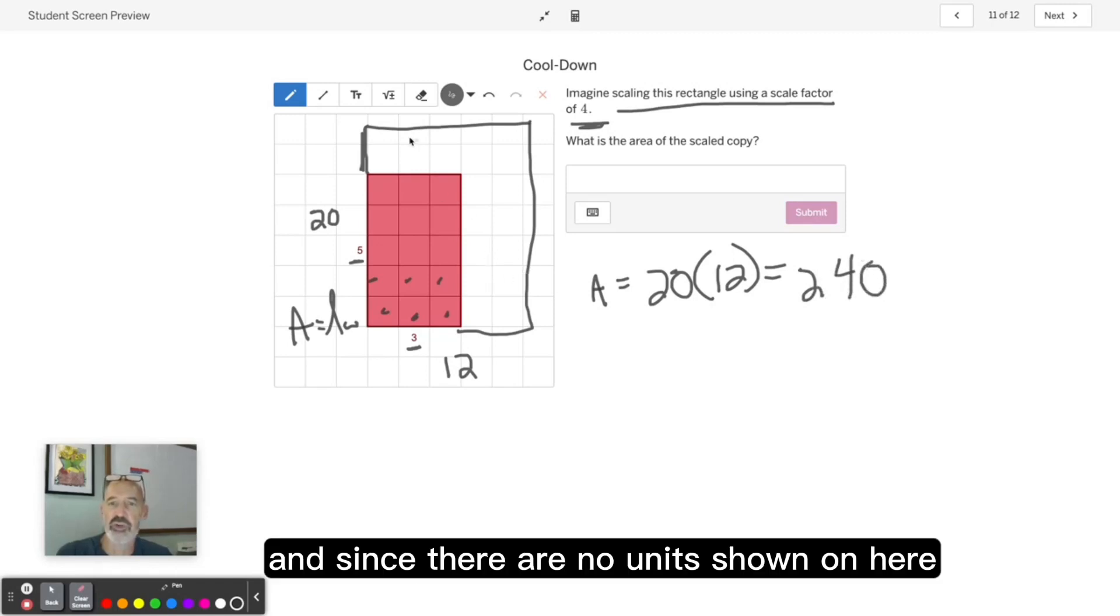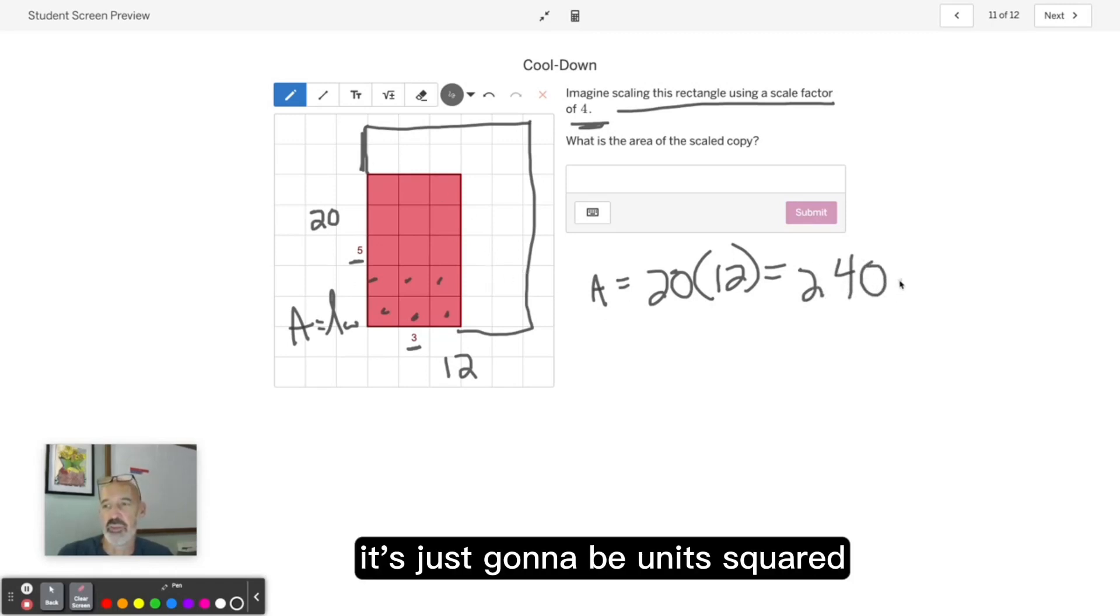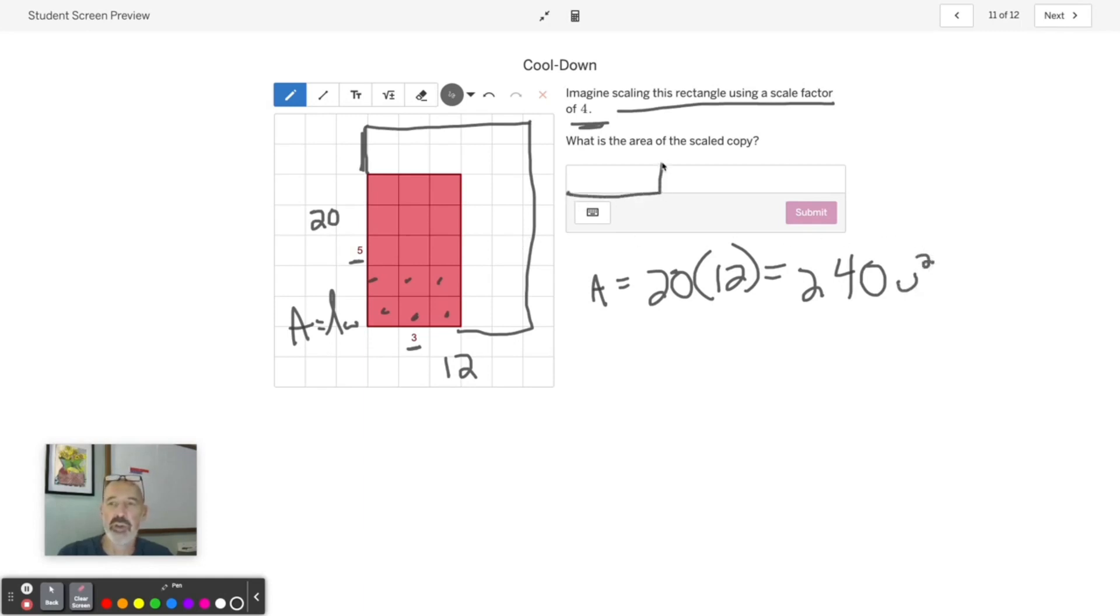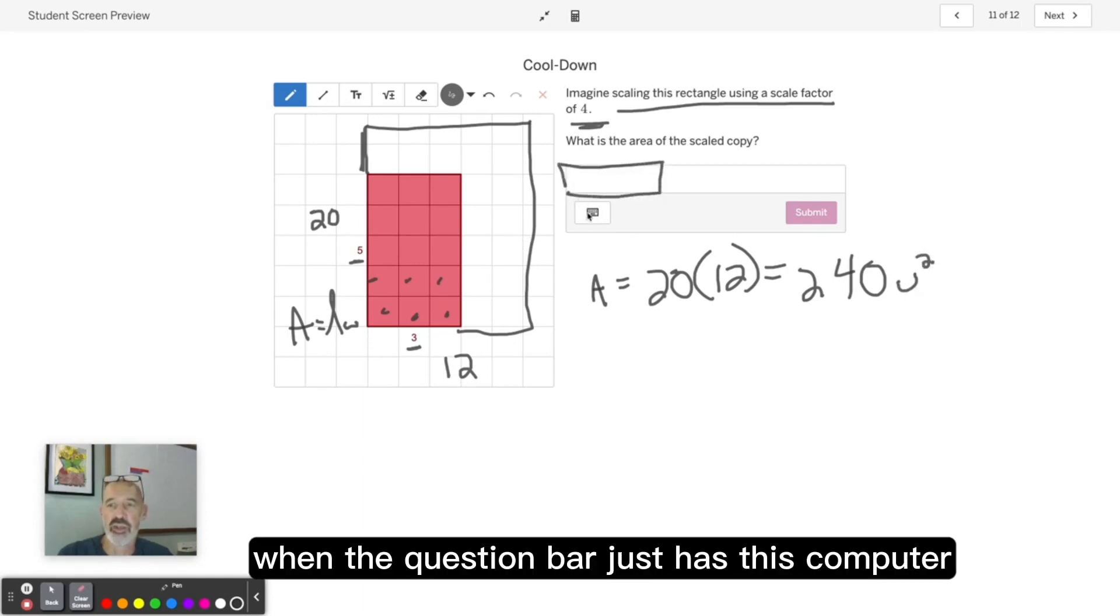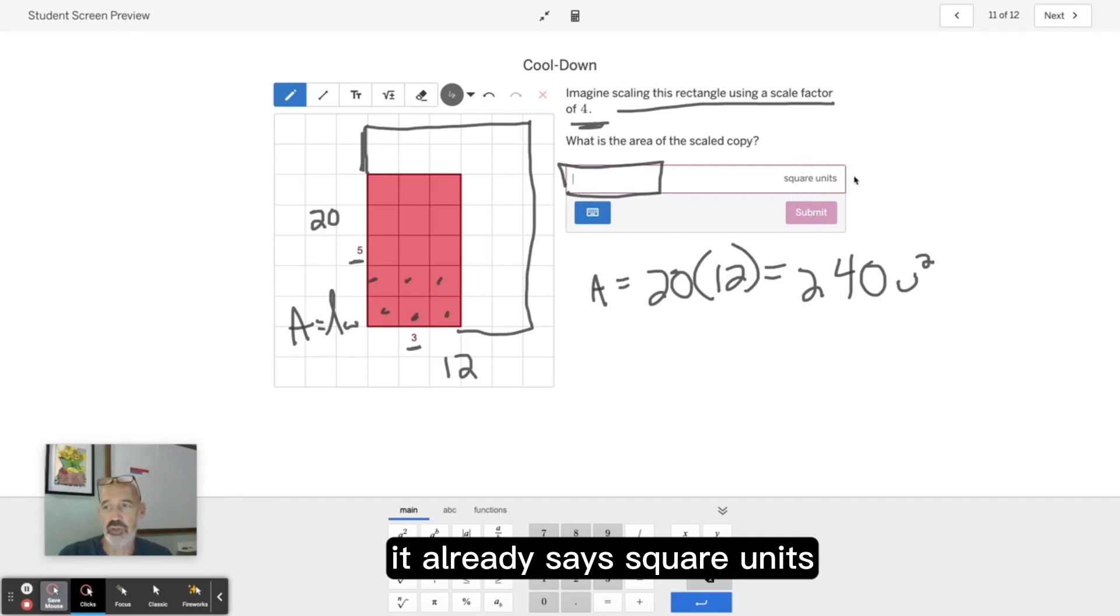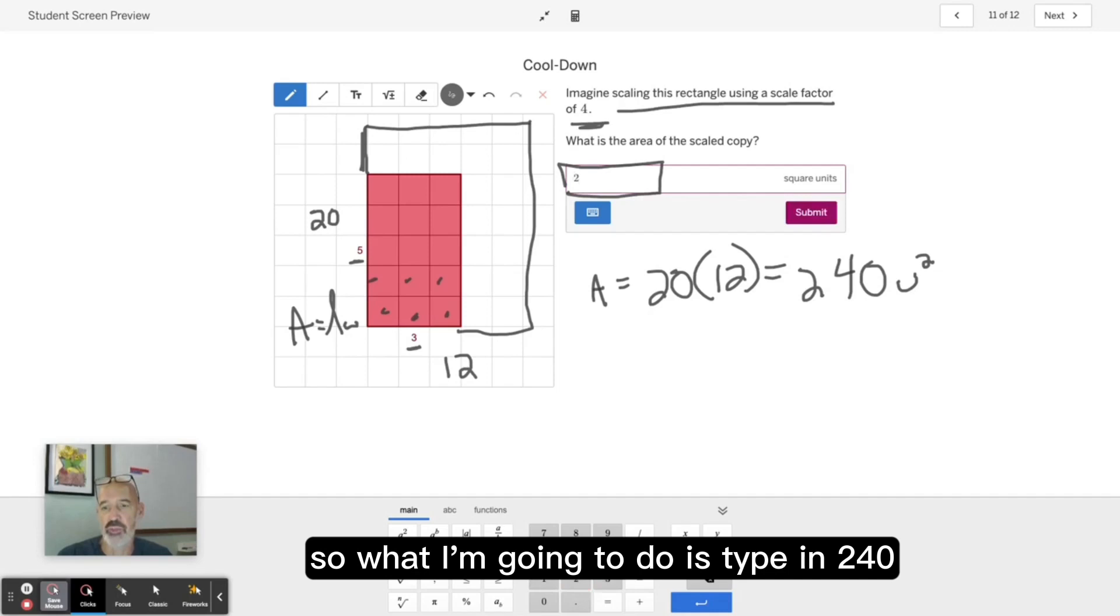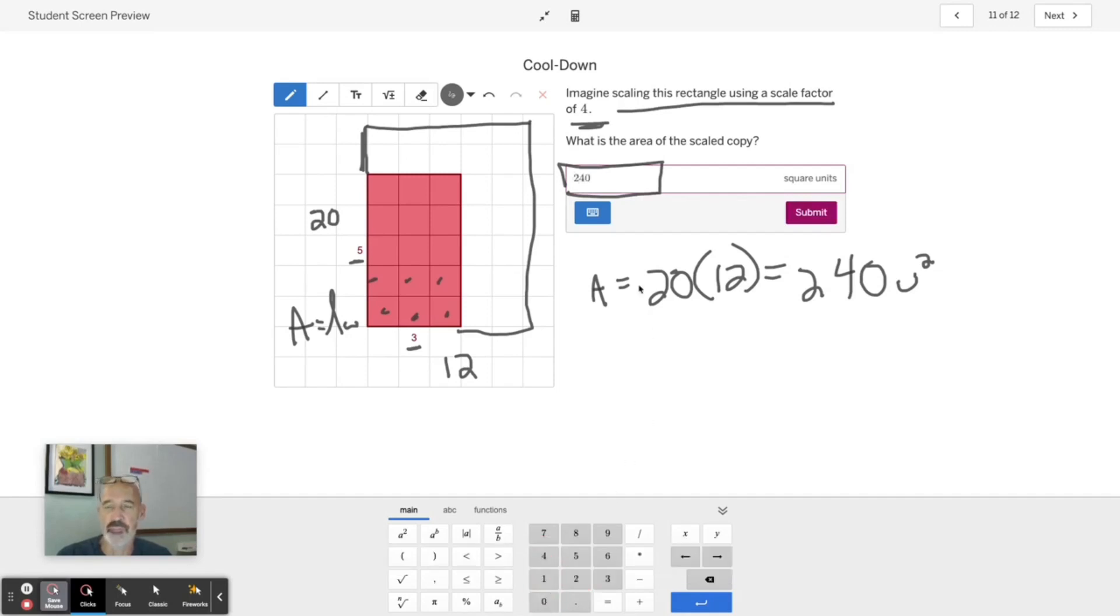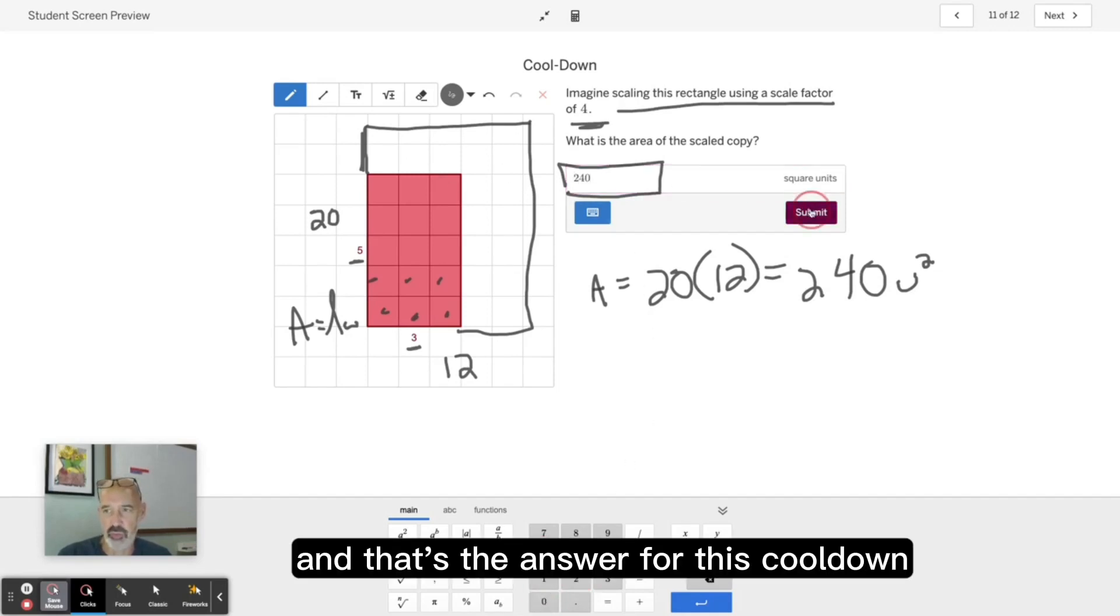Since there are no units shown on here, it's just going to be units squared. But when you type it in here, when the question bar just has this computer icon, that means you only want to put in a numeric value. You notice right here it already says square units, which is equivalent to U squared. So all I'm going to do is type in 240, and that's the answer for this cooldown.